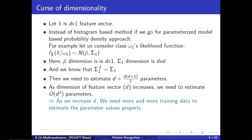So as we increase d, we need more and more training data to properly estimate the parameter values. As d increases, the number of parameters to estimate grows at a rate of order d².